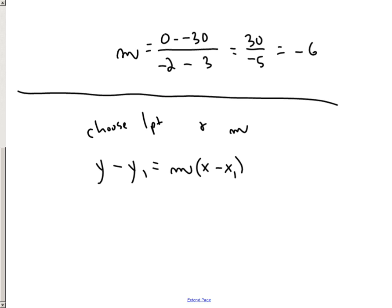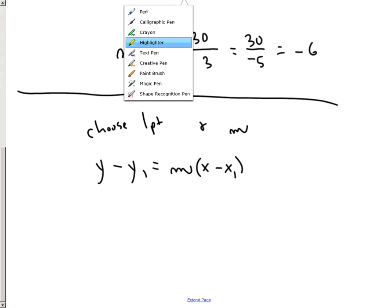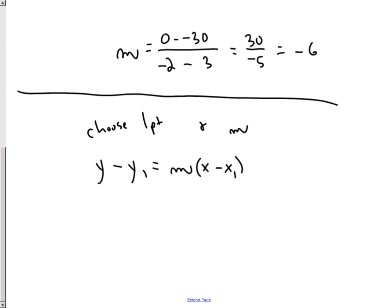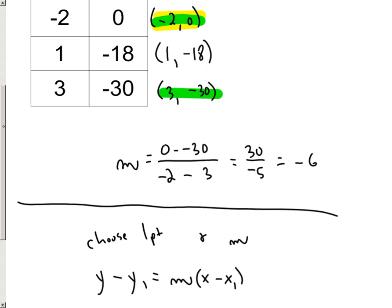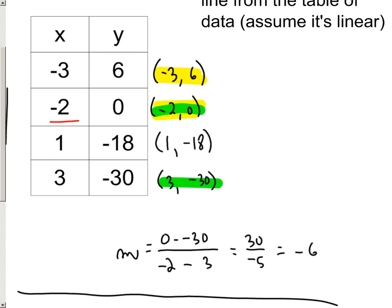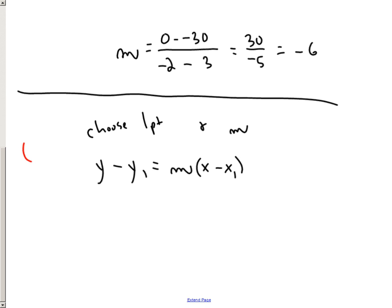So let's go up here and let's choose another point. You could choose any of these four. This is the smallest one, so I'll probably go with that one. Negative 2, 0 is my point I'm going to use. And our slope, we found out, was negative 6. And we plug all of this information in. So Y minus 0 equals negative 6 parentheses X minus negative 2.